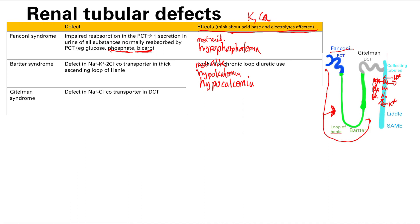Next is Gitelman syndrome, which is in the distal convoluted tubule. The main transporter here is the sodium-chloride cotransporter in the distal convoluted tubule. The drug that blocked this transporter was the thiazide. So Gitelman syndrome is going to look like chronic thiazide use. The pH is going to be the same — thiazide and loop diuretics do the same thing: you get metabolic alkalosis and hypokalemia.